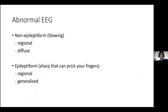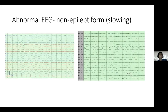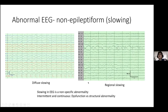When we talk about abnormal EEG, we divide it into non-epileptiform and epileptiform. Non-epileptiform refers to slowing, which can be regional or diffuse. Epileptiform can also be divided into regional and generalized. I remember epileptiform as something sharp enough to break your fingers — as taught by a prominent professor. On the left is diffuse or generalized slowing; on the right is regional slowing over the right temporal chain.